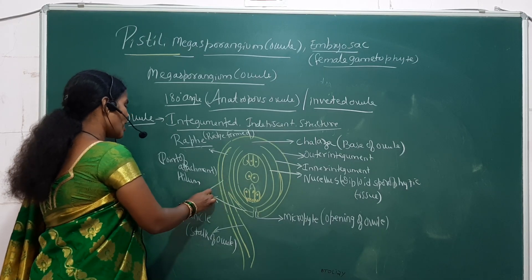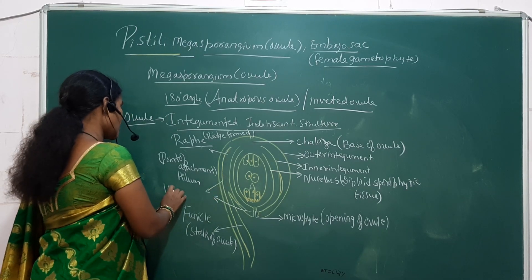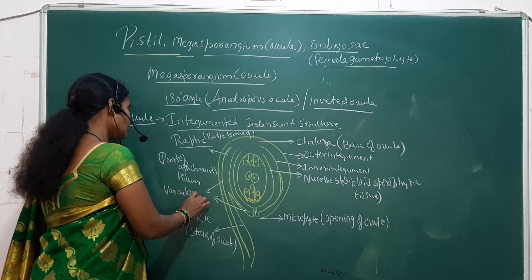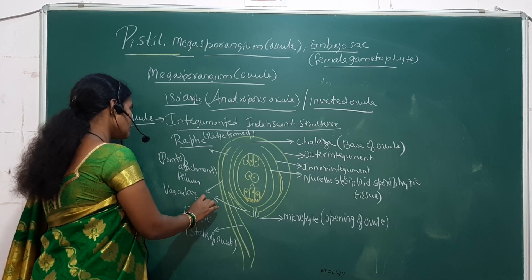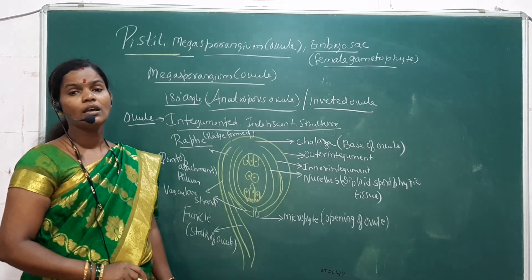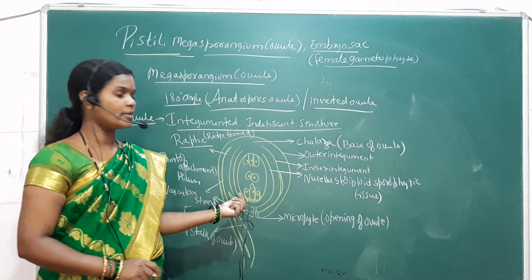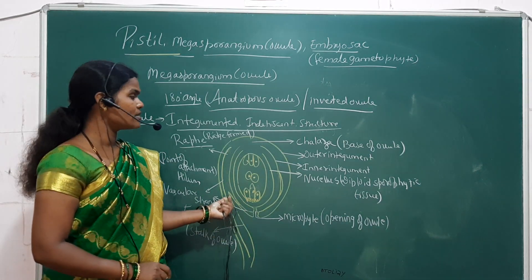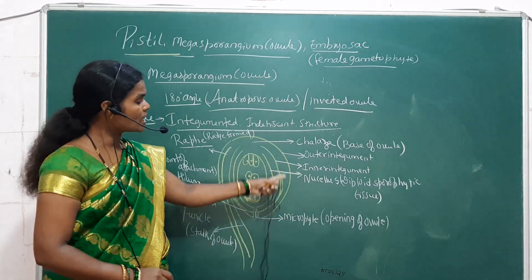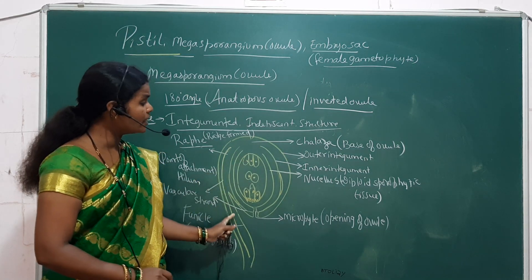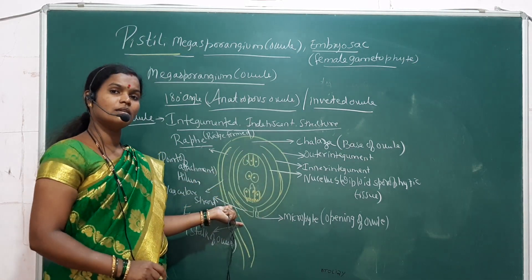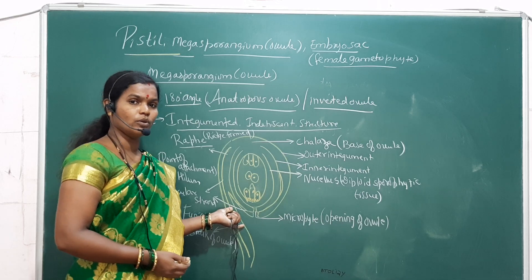Here you can see the vascular strand. The vascular tissue or vascular strand provides nourishment to the ovule. These are the parts where you can see the complete structure of the ovule.